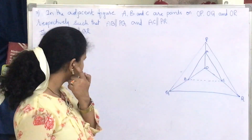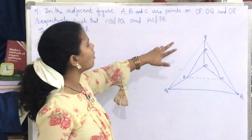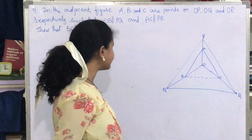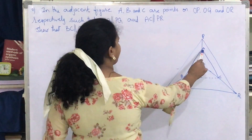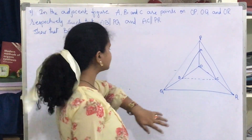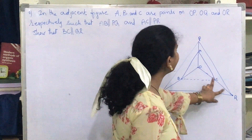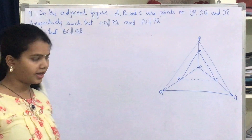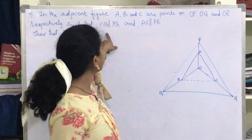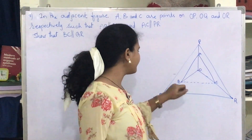Given: A, B and C are points on OP, OQ and OR respectively. A is the point which lies on OP, B is the point which lies on OQ, and C is the point which lies on OR. Such that AB is parallel to PQ.